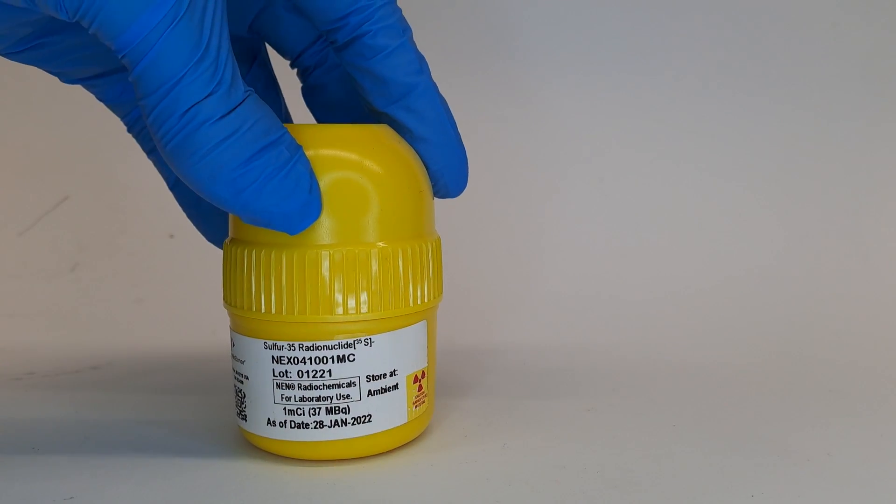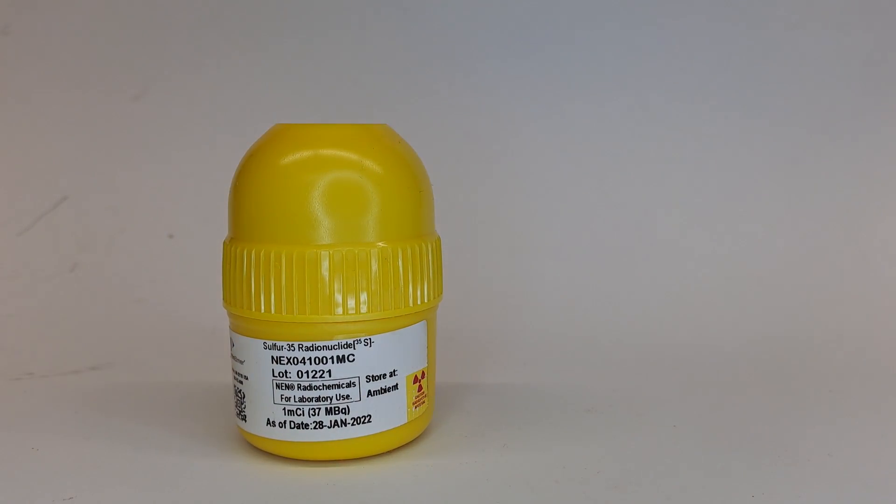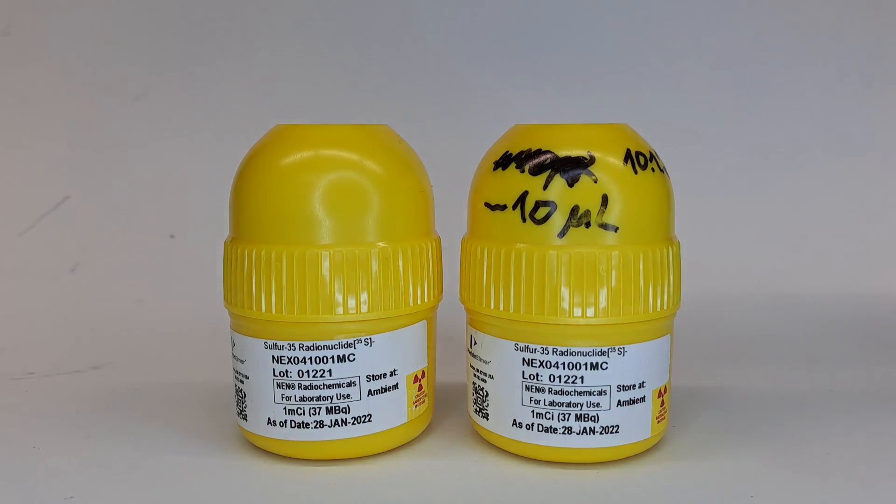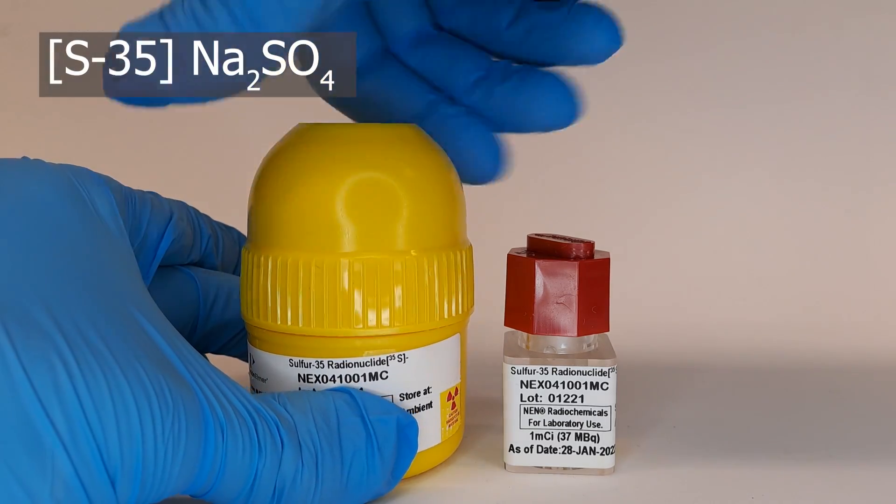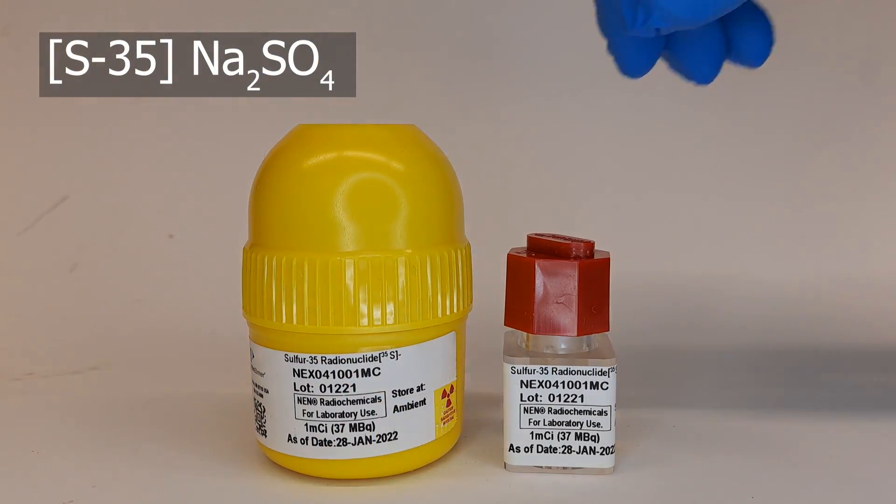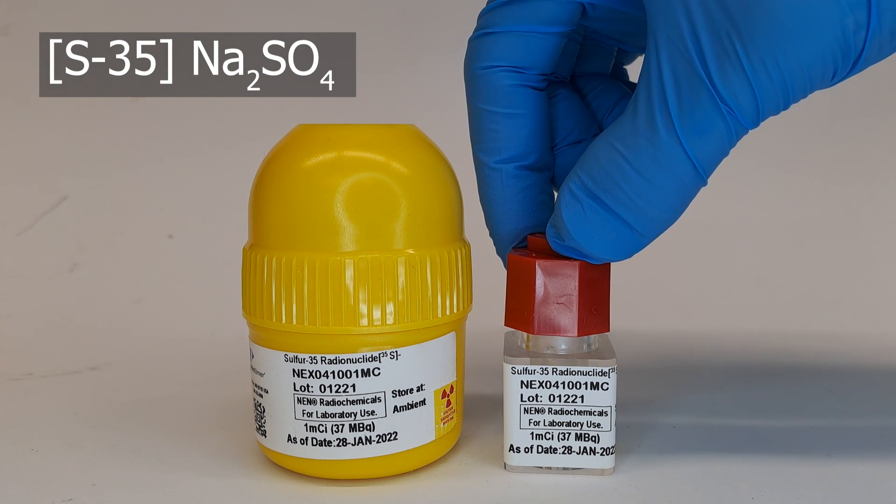A short overview on the radionuclide Sulfur-35. This is a solution of Sulfur-35. This nuclide is a beta-only emitter, meaning there are no gamma lines associated with the decay of this nuclide.